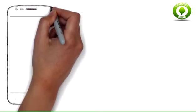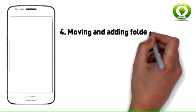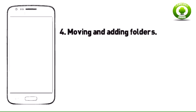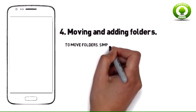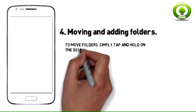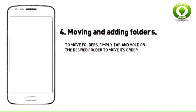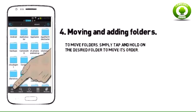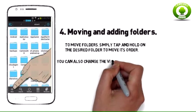Step four: Moving and adding folders. Tap the plus sign at the dock to add a new folder. To move folders, simply tap and hold on the desired folder to move its order. You can also change the view of folders by tapping the View button at the dock.